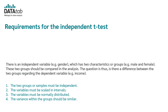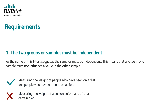Let's look at each requirement in detail. First, the two groups or samples must be independent — as the name of the t-test suggests, the value in one sample must not influence the value in the other. This is fulfilled, for example, if you measure the weight of people who have been on a diet and people who have not. But it is not fulfilled if you measure the weight of a person before and after a certain diet, because then you have the same person measured twice — that gives a dependent sample.